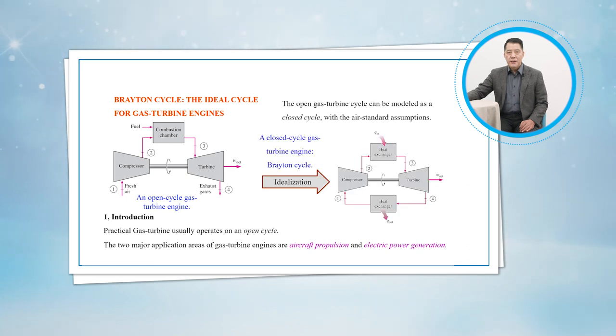The open gas turbine cycle just described can be modeled as a closed cycle, as shown in figures 10.28 and 10.29, by using the air standard assumptions. Here, the compression and expansion process remain the same.